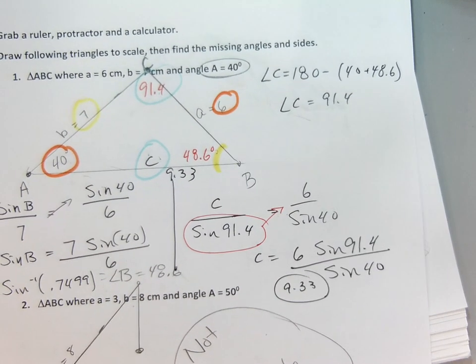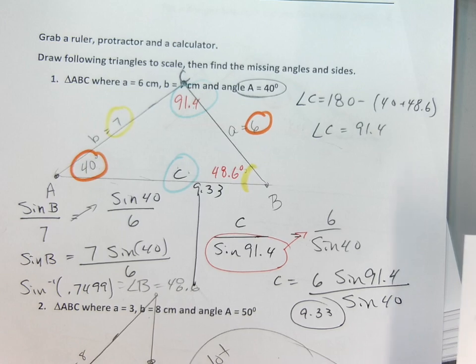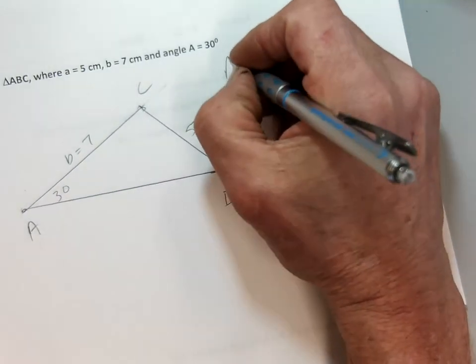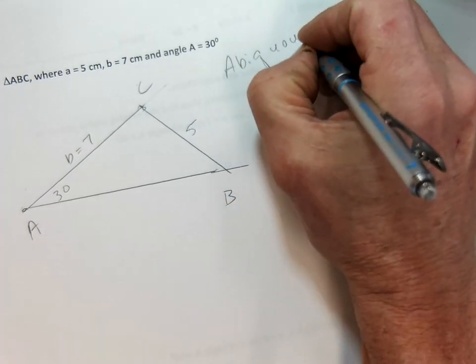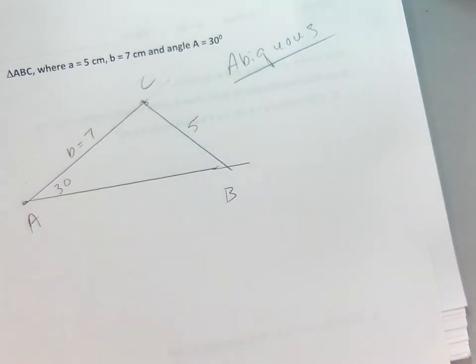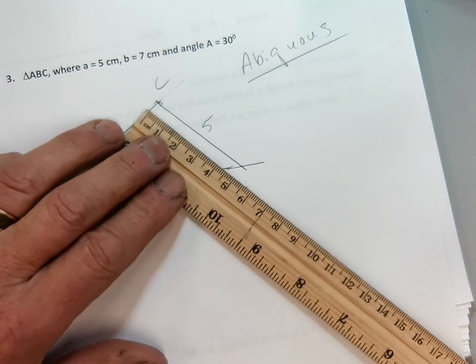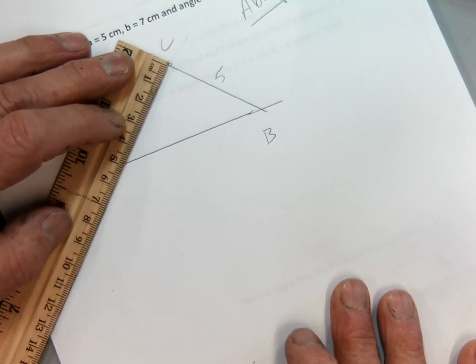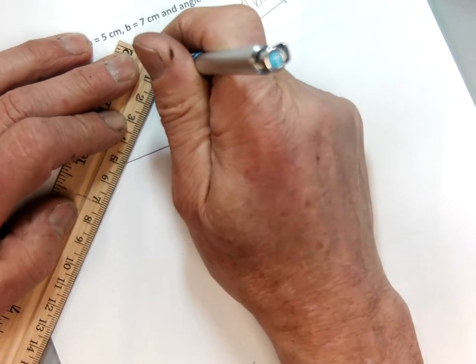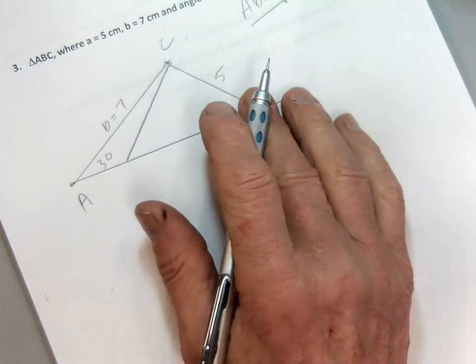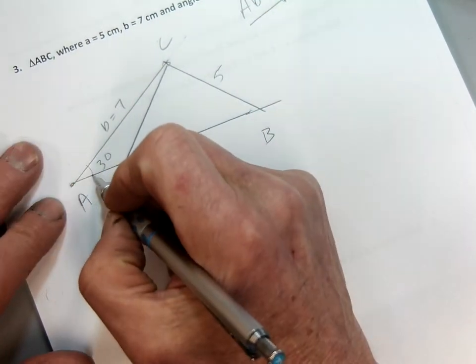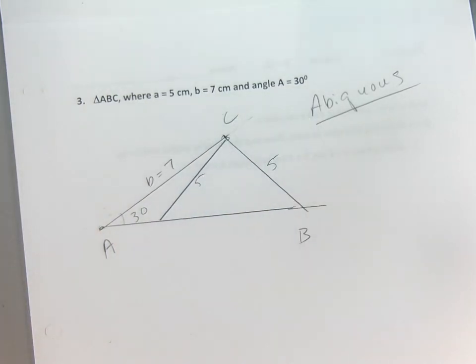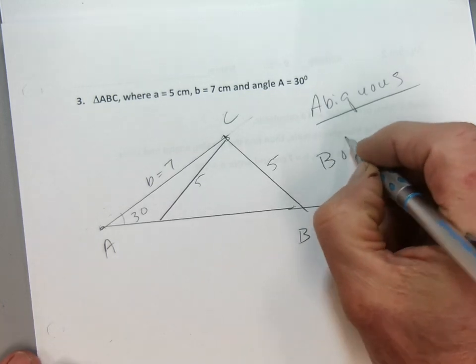There's not much difference between that and example one, except today's lesson is called the ambiguous case. Why is this ambiguous? Well, I could have drawn this five right here and had a different triangle. It's still the same directions. Thirty degrees, seven and five. Which triangle's correct? They both are. Both triangles work.